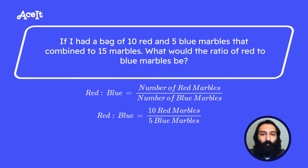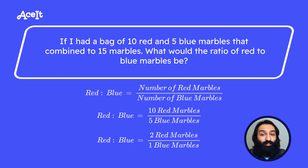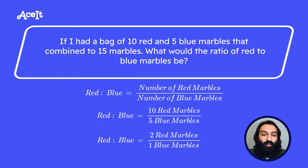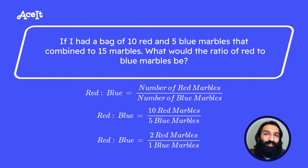We can then reduce the fraction. We know that both 10 and 5 share a greatest common factor of 5, so we can divide both by 5 and get 2 red marbles over 1 blue marble. So for every two red marbles, there's one blue marble — essentially, the number of red marbles is double the number of blue marbles. Looking back at 10 red and 5 blue, we can see that the red marbles are indeed double.